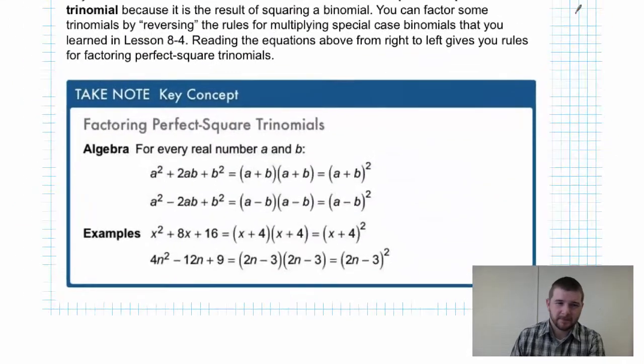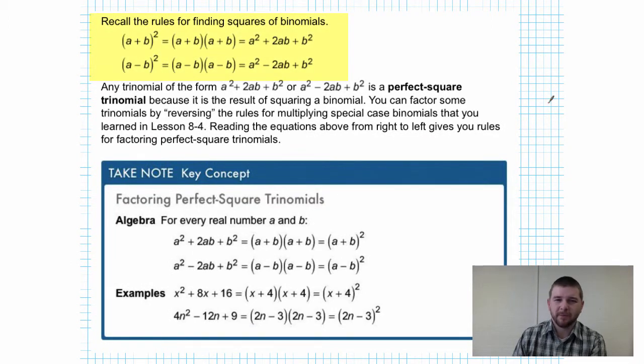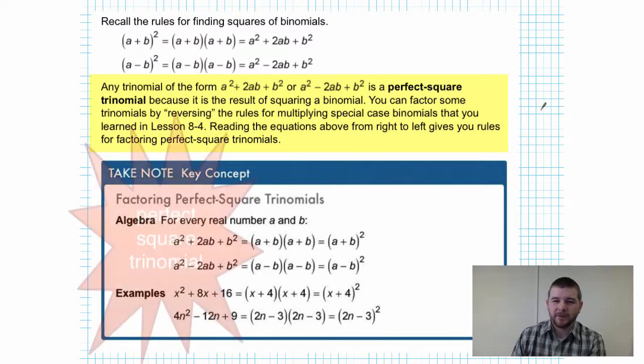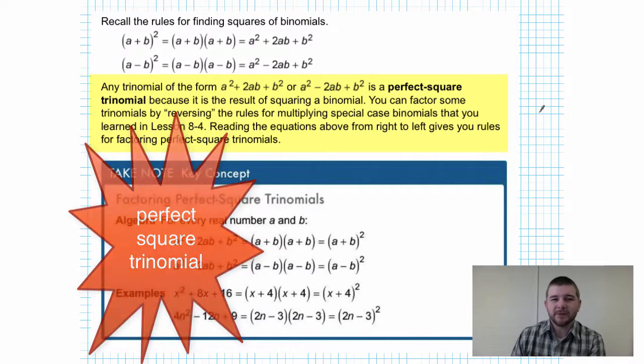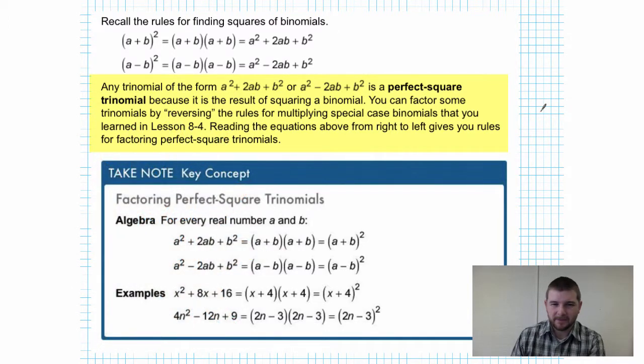Throughout this process we should recall the rules for finding squares of binomials. Right, (a + b)² equals the information at the right. We're more accustomed to seeing a as being an x or a y variable and b as being some constant, but regardless, (a + b)² equals a² + 2ab + b². Similarly, (a - b)² equals a² - 2ab + b². Any trinomial of the form a² + 2ab + b² or of the form a² - 2ab + b² is a perfect square trinomial because it's the result of squaring a binomial.